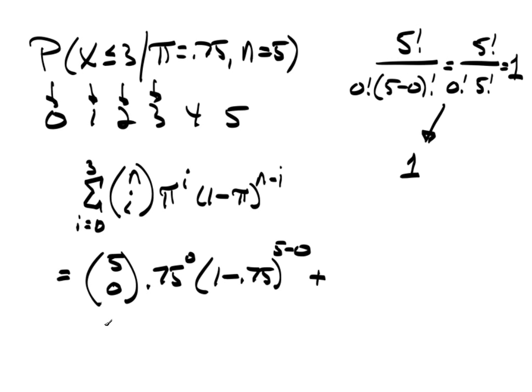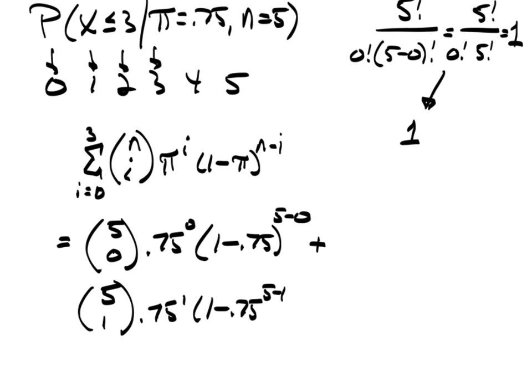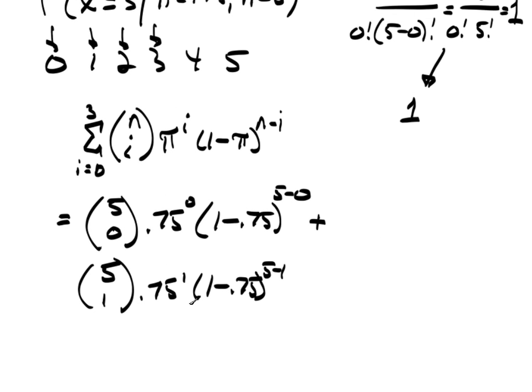So, plus, now I is going to be 1. This is 5, choose 1, times 0.75 to the 1st. 1 minus 0.75 to the 5 minus 1, which is to the 4th power. So, here I have my 4 failures, or my failure raised to the 4th power, which is my 4 failures, and only 1 success raised to the 0.75 raised to the 1st power.